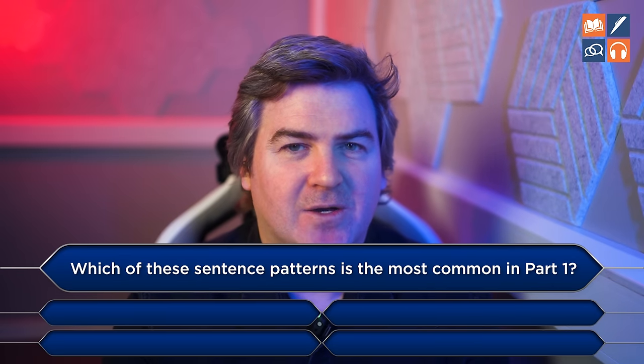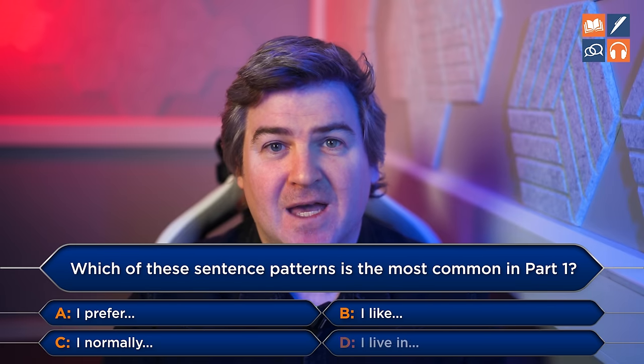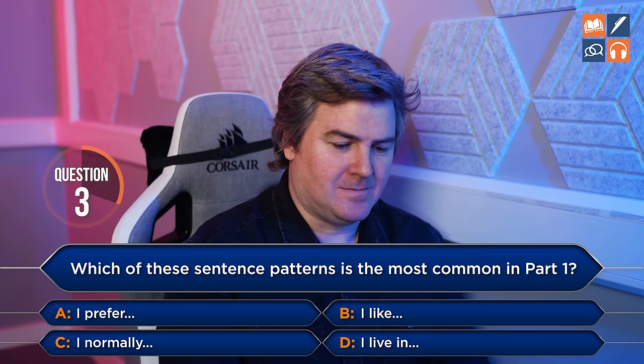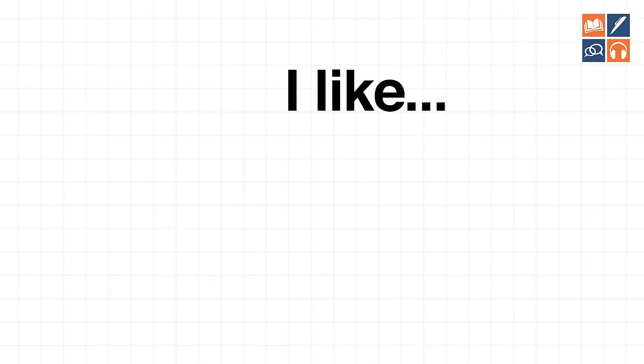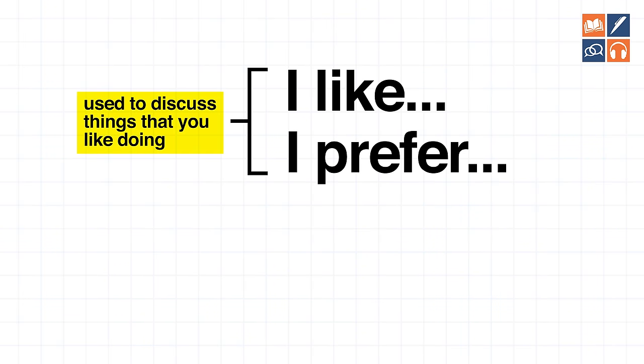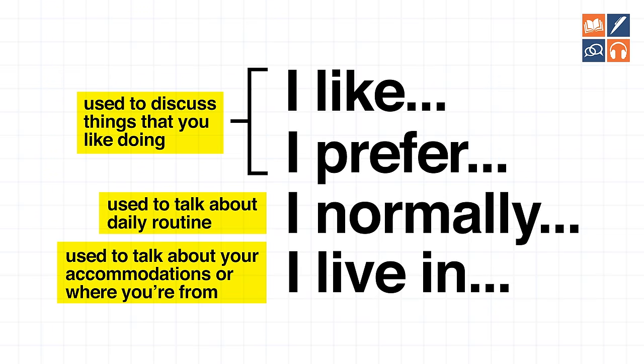Question 3: Which of these sentence patterns is the most common for band 7, 8 and 9 students in part 1? 'I prefer', 'I like', 'I normally', or 'I live in'. The correct answer is 'I like'. But these are all actually very common sentence patterns in part 1. We use 'I like' and 'I prefer' to discuss things we enjoy, 'I normally' to talk about daily routines, and 'I live in' for accommodation or location.